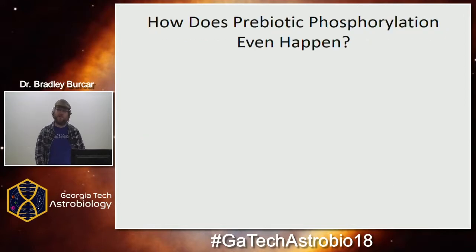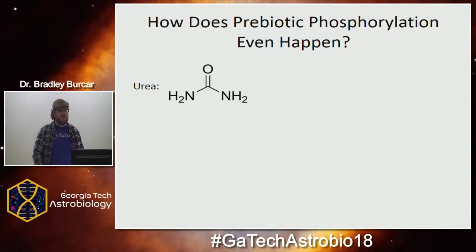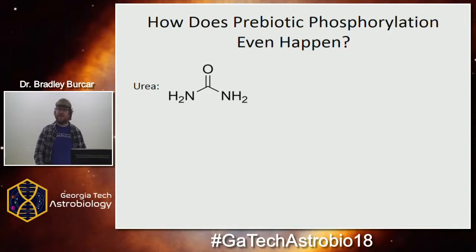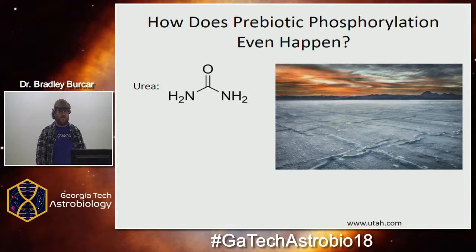So how do we knock out these problems one at a time? A remarkable molecule that's been studied for the past 40 years is urea. This is actually the first organically synthesized molecule from Wöhler in the early 19th century, and it is thought to be extremely abundant on a prebiotic Earth. One of the things we always like to describe is the salt flats you can see throughout the world, like this one depicted in Utah. On a prebiotic Earth, urea would have been so abundant that we probably would have had urea flats just like we have salt flats today.